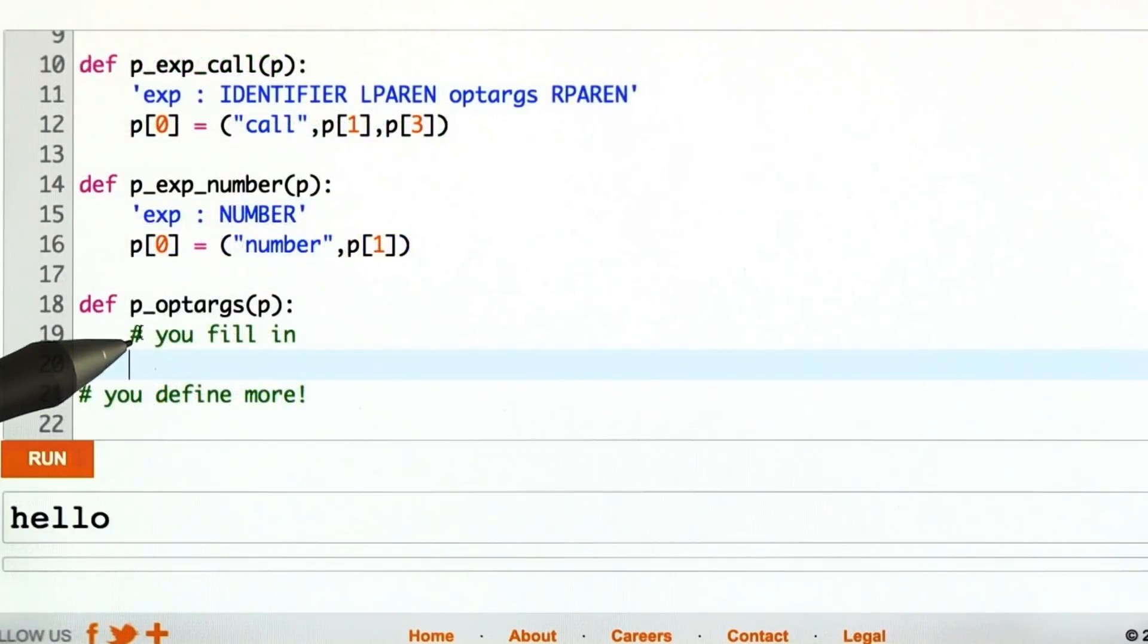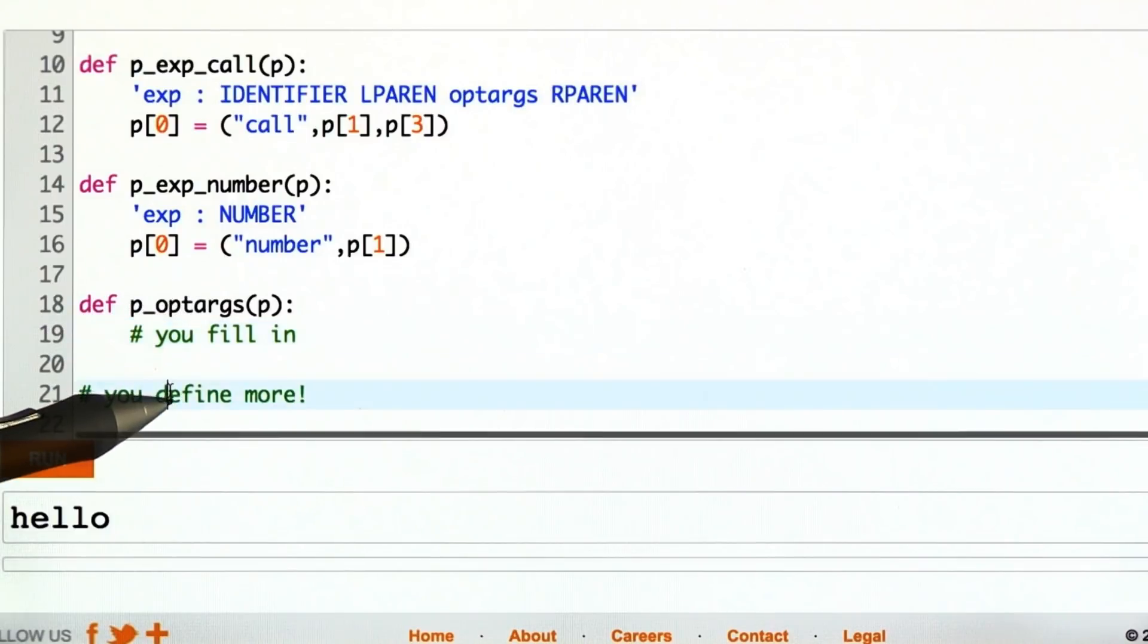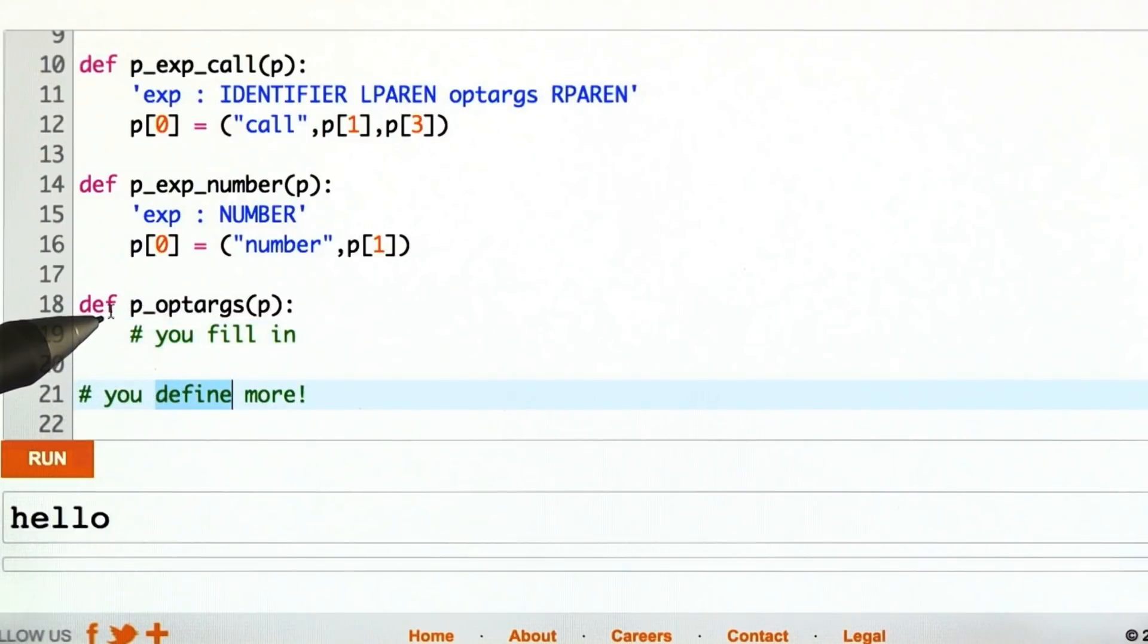So here's the quiz. I'd like you to fill in the value for parsing optional arguments. And you may find that you have to define a few more of these parsing rules, maybe some for there being no arguments, some for there being at least one, that kind of thing. Try it out.